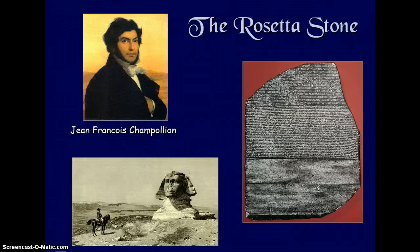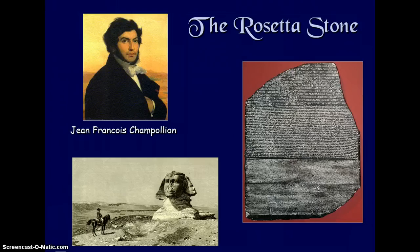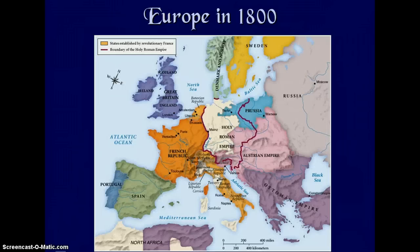The Rosetta Stone, as we all know, is what Jean-François Champollion used to translate Egyptian hieroglyphics, and it is because of France's campaign in Egypt.